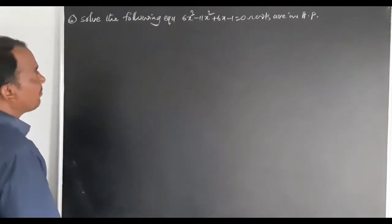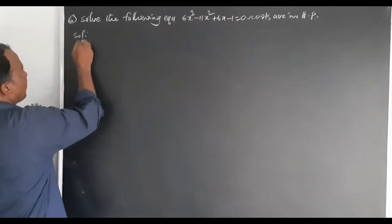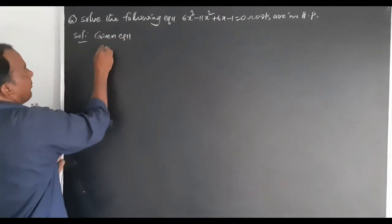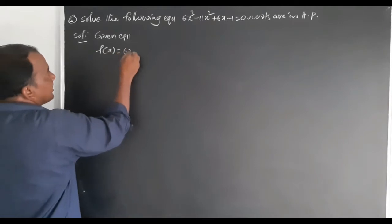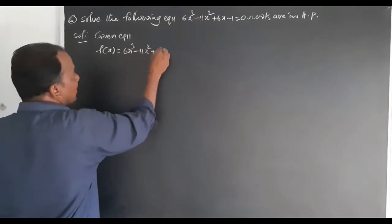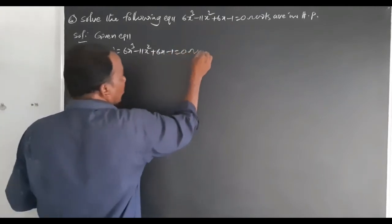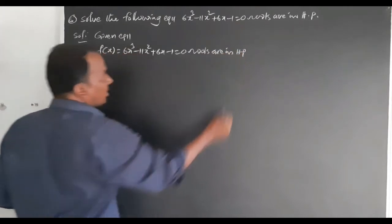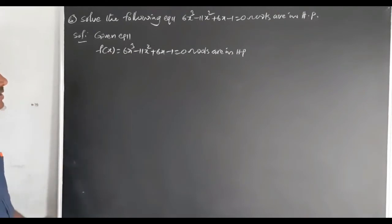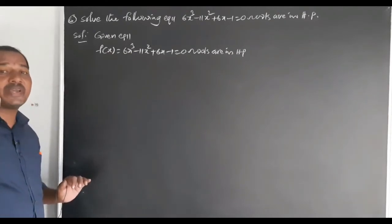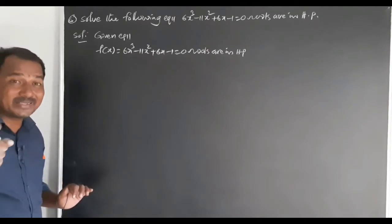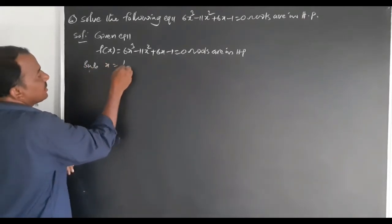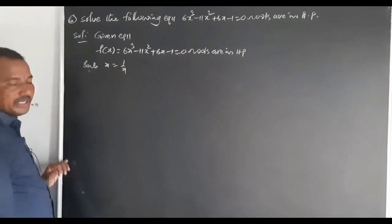Listen carefully. Given equation f(x) equals 6x cube minus 11x square plus 6x minus 1 equals 0. Roots are in HP. For the reciprocal equation of HP, substitute x equals 1 by x in place of x. Right, substitute x equals 1 by x in the equation.